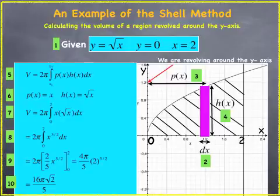And then in item 8, we simplify. x times square root of x is x to the 3 halves. You simply add exponents. And then in 9, you go ahead and integrate. And in 10, we have our final answer.